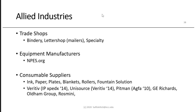Allied industries provide support and services: trade shops, binders and letter shops for mailers, specialty items, and equipment manufacturers. Consumable supply retailers for ink, paper, plates, blankets, rollers, and fountain solution include companies like Veritiv, Unisource, Pitman, GE Richards, and Oldham Group — that's where most printers buy their supplies.